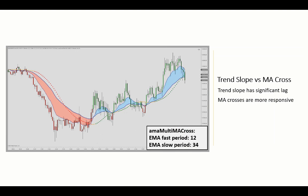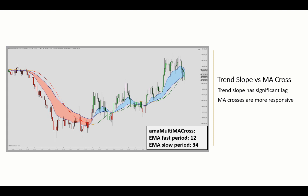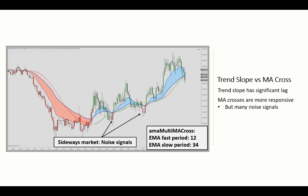A disadvantage of using a slope for determining trends with coloring is the significant lag in delivering the information. You would get more timely signals by applying a moving average cross — for example, a positive trend when the short moving average is above the long, and vice versa for the short scenario. That will reduce lag significantly, though you will unfortunately also see a lot of noise signals in ranging markets when prices move back and forth crossing the moving average several times from above and below.